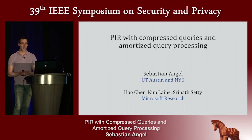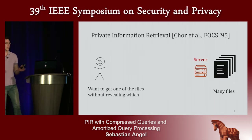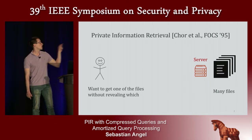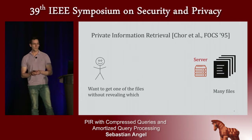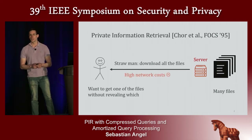If you're not familiar with PIR, here's the basic setup. There is a server that has many files — these could be movies, songs, academic papers, it doesn't matter. There's also a client who wants to access one of these files, but doesn't want to reveal which file it is accessing to the server. One way the client can do this is to just download the entire database and then locally select the file it cares about, but this has very high communication costs.